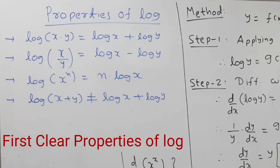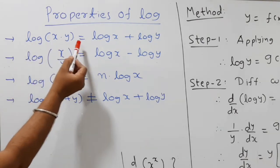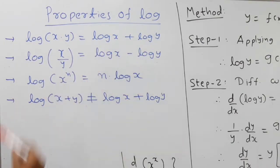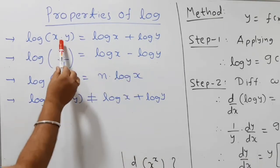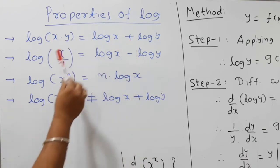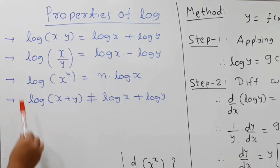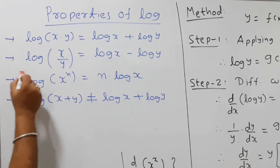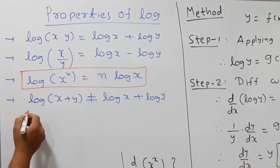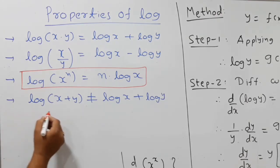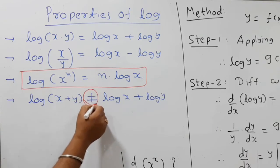Properties of logarithm: log(x·y) equals log x plus log y. Log(x/y) equals log x minus log y — multiplication converts to addition, division converts to subtraction. The most important property: log(x^n) equals n·log x, meaning the power gets multiplied out in front.